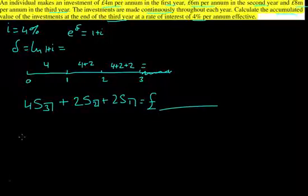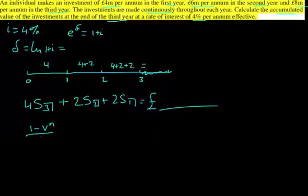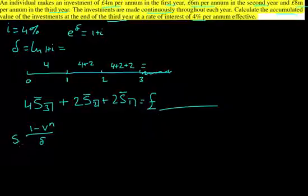So how do we find this? Finding a series — you can check out a lot of the other videos — but it's essentially (1 minus v to the n) over i. But instead of using over i, we're going to be putting it over delta, because it's a continuous series. You could also do this using integrals, but here we're putting delta in like that.